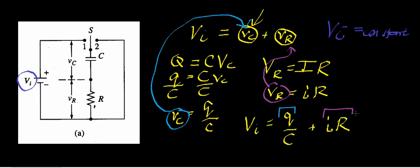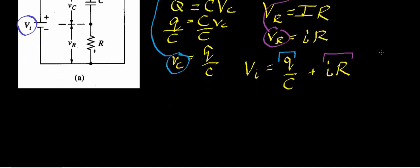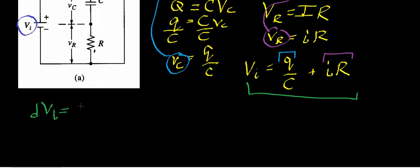All we did is solve for voltage in both cases using instantaneous voltages. Now let's express this equation in differential notation. An infinitesimally small change in the input voltage equals an infinitesimally small change in charge held by the capacitor divided by capacitance — which is a constant — plus an infinitesimally small change in current times the resistance.